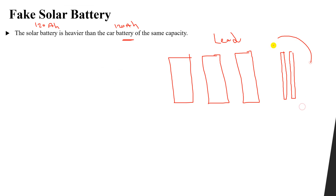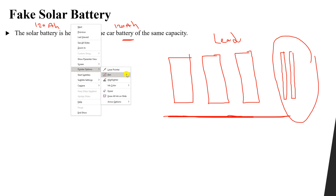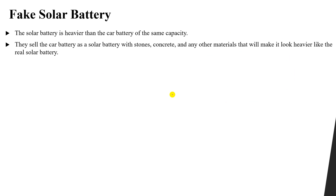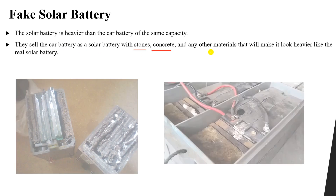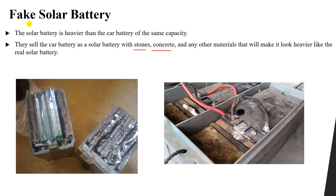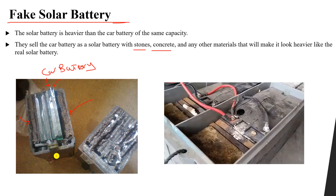So how do fraudsters sell a car battery as a solar battery? They simply take a car battery and add stones, concrete, or other heavy materials inside to make it heavier, like a real solar battery. You can see examples of fake solar batteries with the same thin plates as a car battery, but with concrete, clay, or stones added to increase the weight.